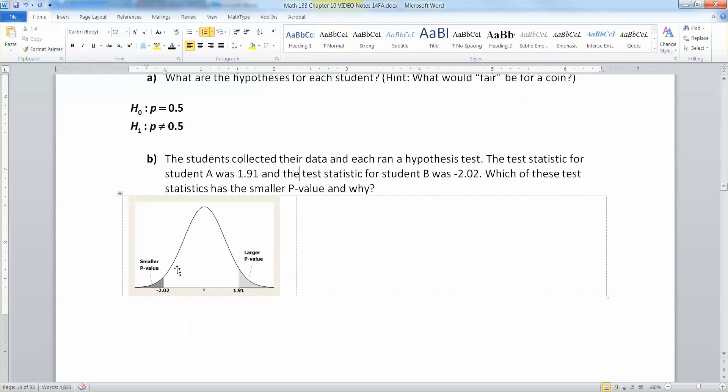The p-value is the area in that extreme, in that tail. And I've drawn these, I've exaggerated just a little bit, but you can see what's happening here. The negative 2.02 is farther from the center at zero. Since it's farther from the center, it's going to have a smaller tail. And that tail is what your p-value is.